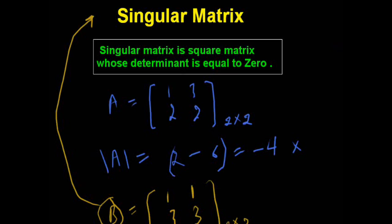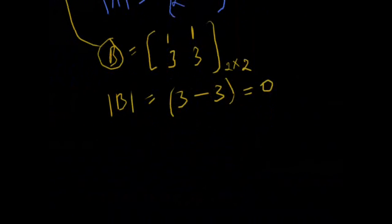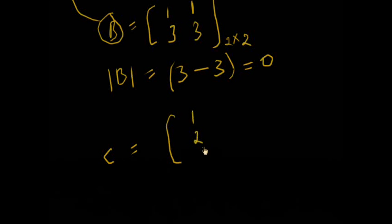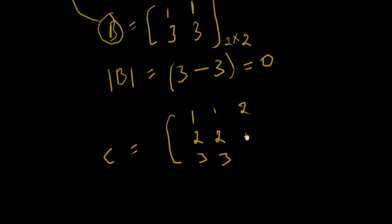Matrix A is not a singular matrix because its determinant is not zero. Now let's look at a 3×3 matrix. This is matrix C: [[1, 2, 3], [1, 2, 3], [2, 4, 6]].